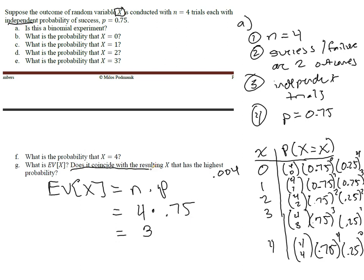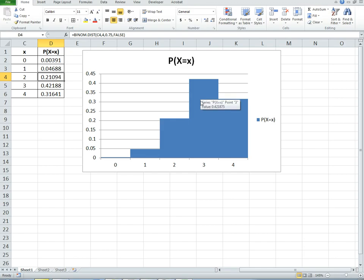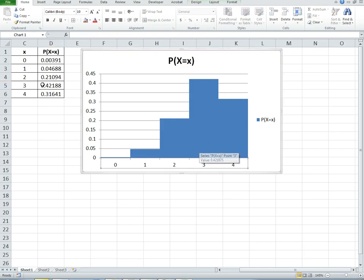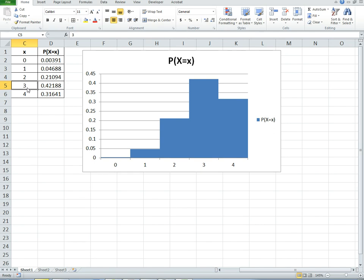And the question is, does it coincide with the resulting x that has the highest probability? And it does, because the x that has the highest probability is 3. And that is also our expected value. Now, sometimes it doesn't work out so nicely, but it should be.